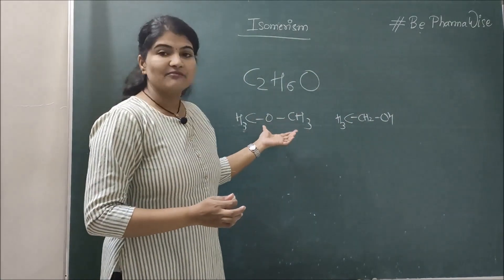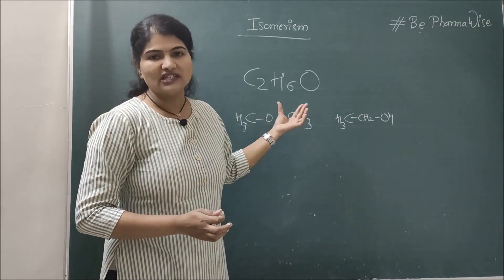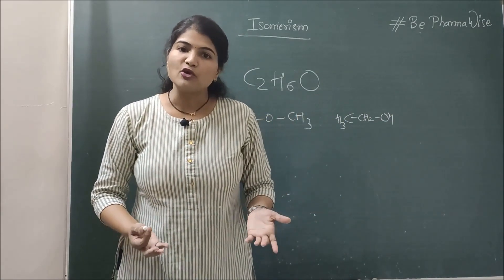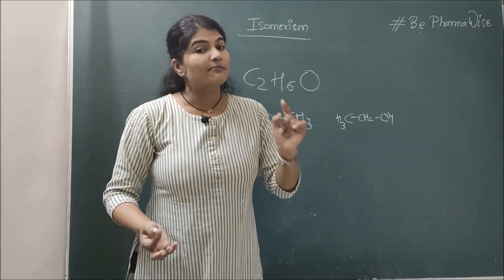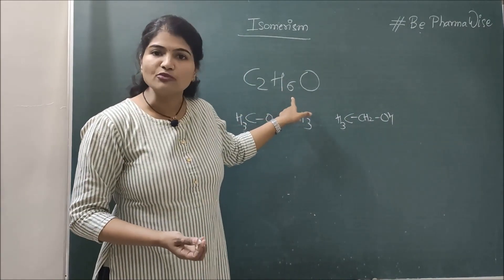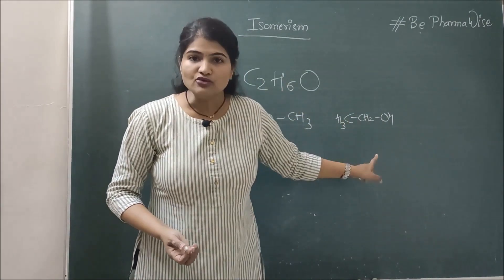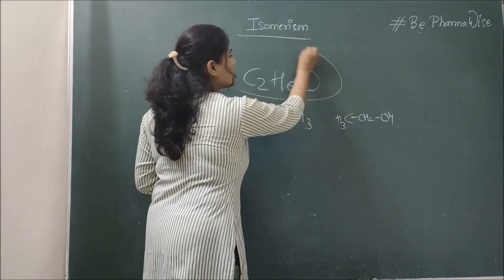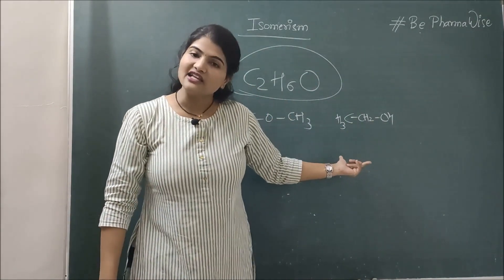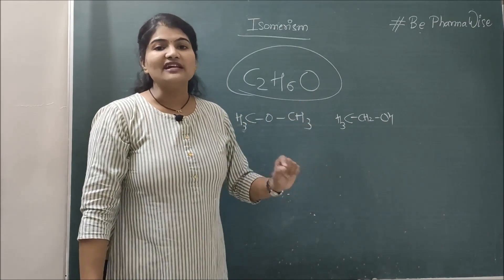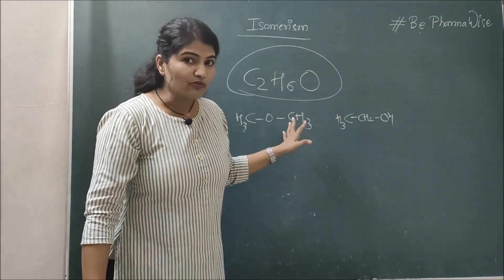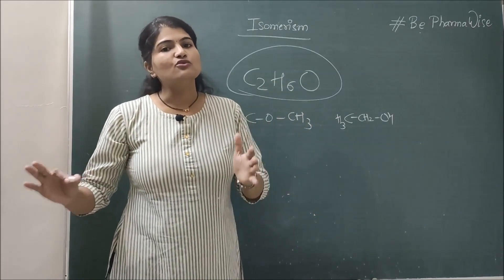Now if you look at the chemical classes, one is ether and one is alcohol. So definitely their physical and chemical properties will be different from each other, but they both share the common molecular formula. Such compounds which have similar molecular formula but different physical and chemical properties are called isomers of each other, and this phenomenon is called isomerism.